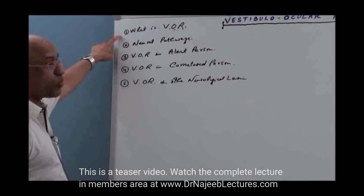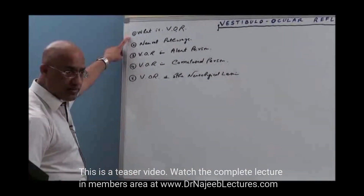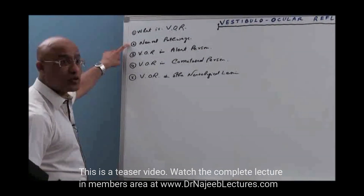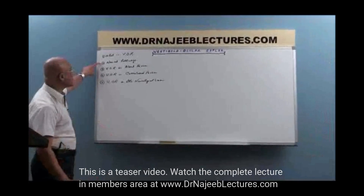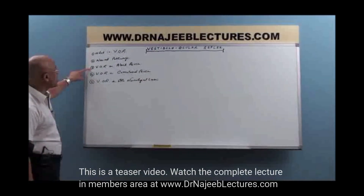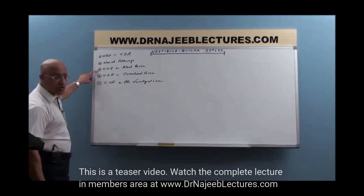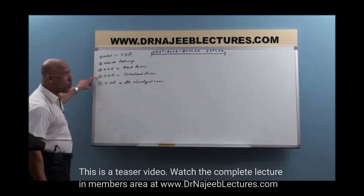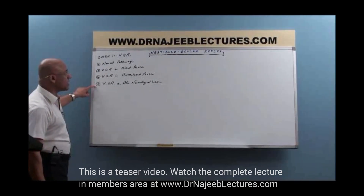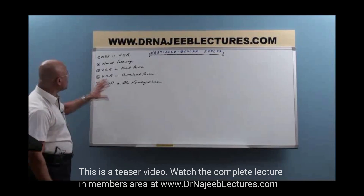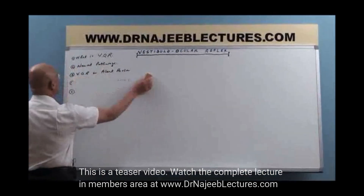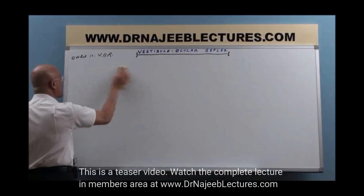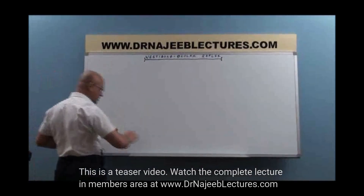First we will discuss what vestibulo-ocular reflex is and what its purpose is. Then we will discuss the neural pathways controlling this reflex. Then VOR in the alert person, in the comatose person, and VOR in other neurological lesions. So first of all, we are trying to answer: what is vestibulo-ocular reflex and why do we need it?